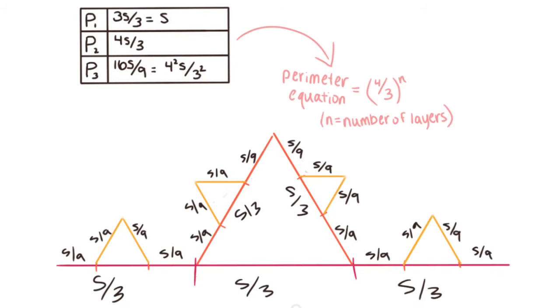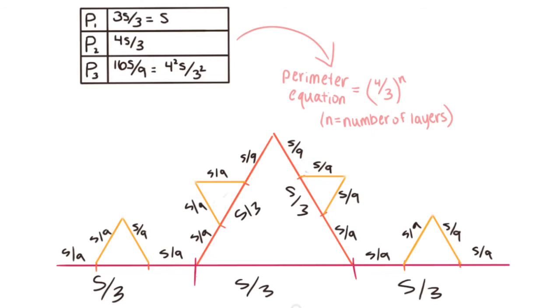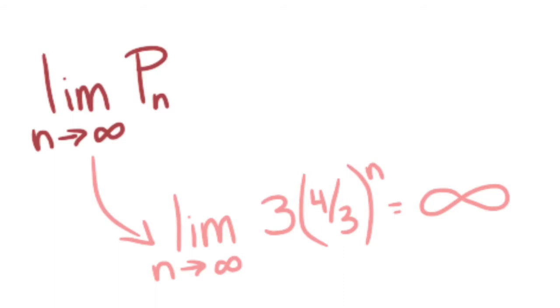Since the Koch curve is only one side of the snowflake, we can multiply 4 over 3 to the nth power by 3 to get the total perimeter. We can plug this into a limits problem, and discover that the perimeter of a Koch snowflake is infinity.